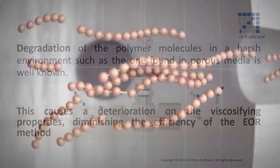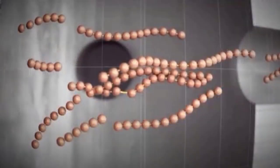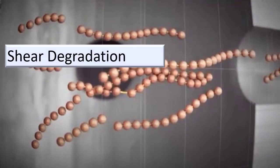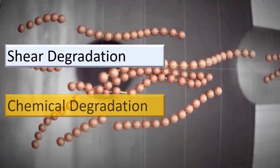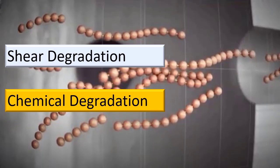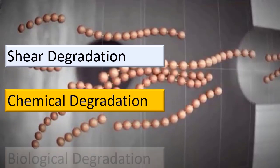The polymer chains are mainly subjected to shear degradation, chemical degradation, or biological degradation.